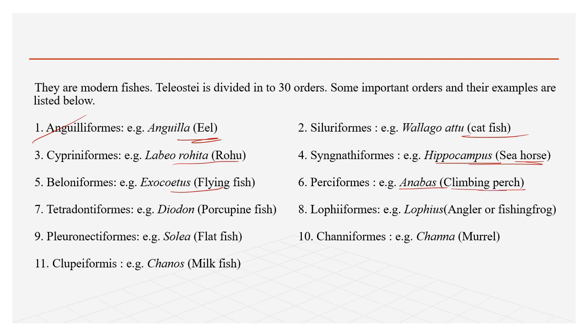Examples of Teleostei include Tetraodontiformes (Tetradon, Diodon — porcupine fish), Lophiiformes (anglerfish, frogfish), Pleuronectiformes (Solea — flatfish), Channa (snakehead), and milkfish. The majority of modern fishes come under super order Teleostei.